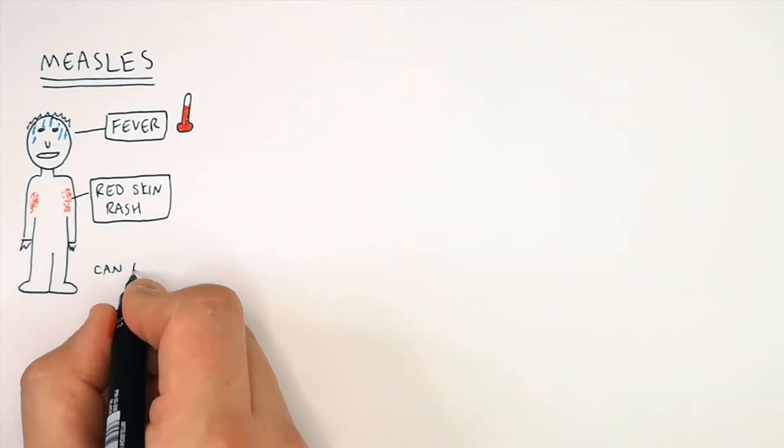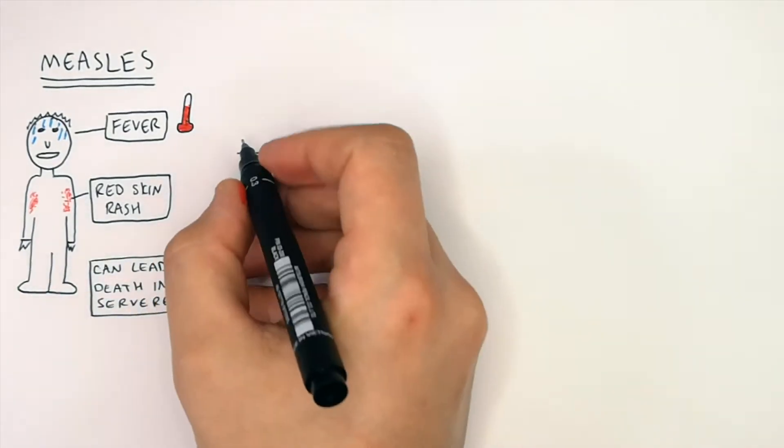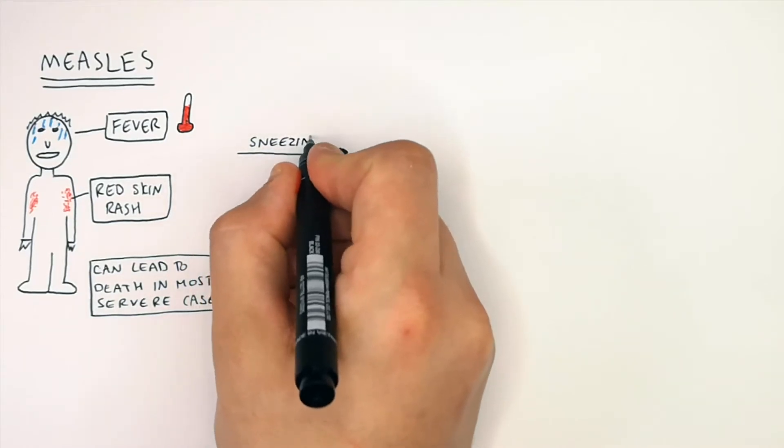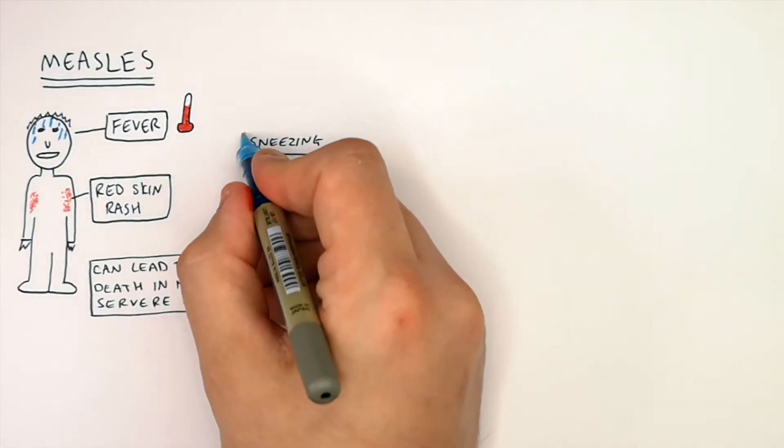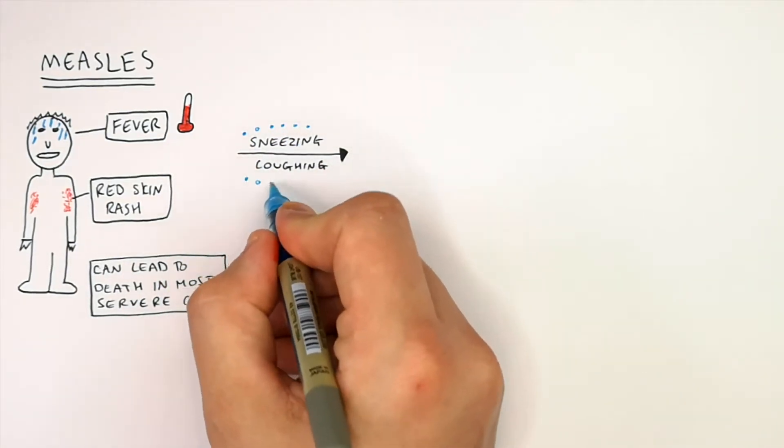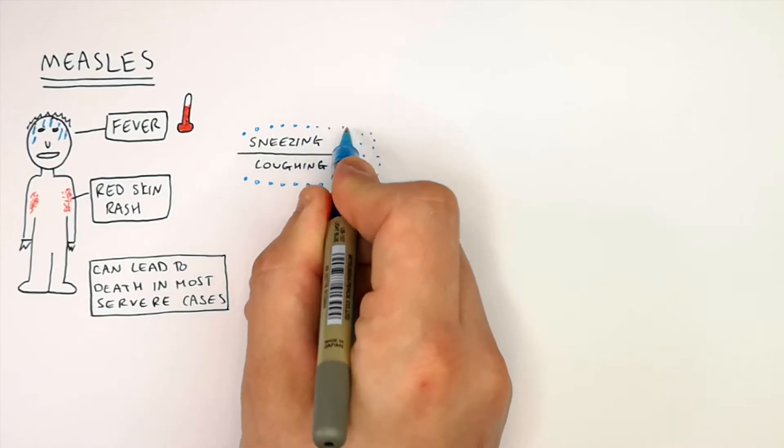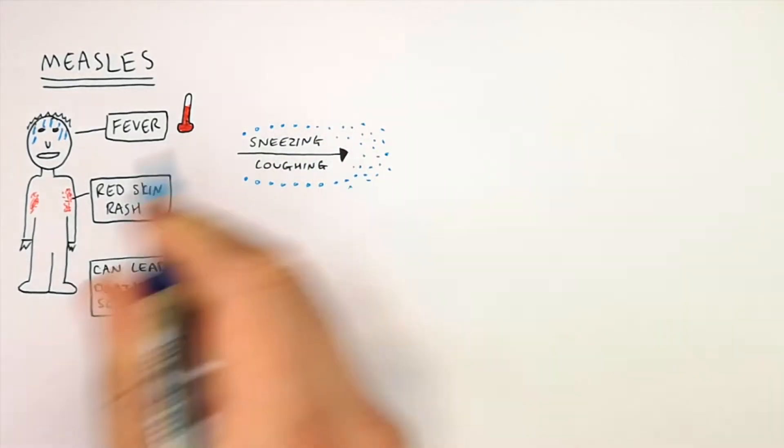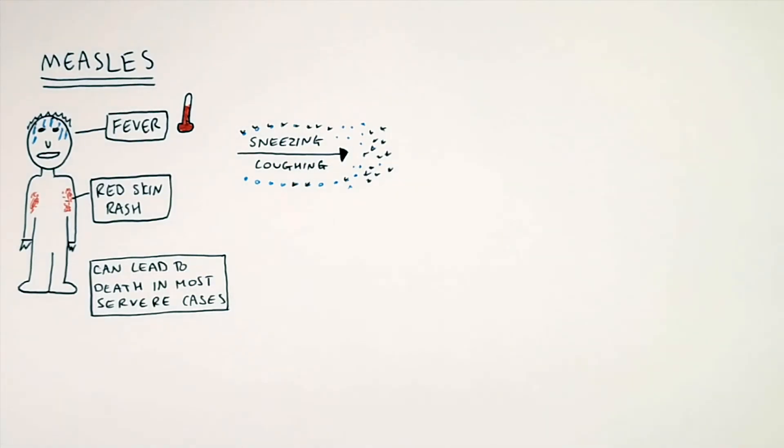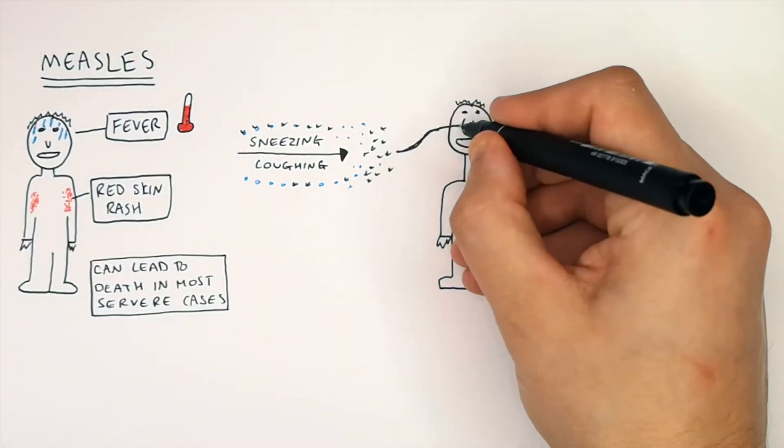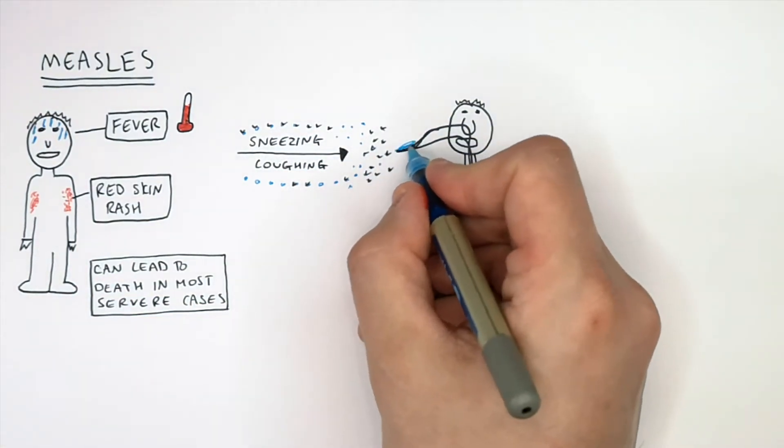Measles in its most severe form can cause death, but this is very rare. The virus is going to be in mucus when you sneeze or cough. So if you sneeze or cough, you're going to transmit the virus via the mucus. It's an airborne transmission. If someone inhales the mucus droplets containing the virus, they're going to become infected by the measles virus.